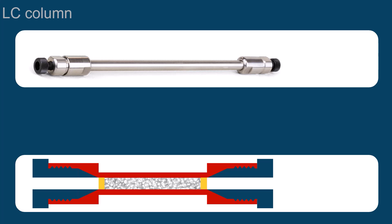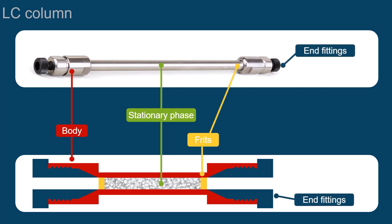The LC column contains the stationary phase. It also consists of the body, the end fittings, and the frits. The body of the column is tubular and mostly made of metal. The frits are filters, located at each end of the column. They prevent particles from entering the column and ensure that the stationary phase and other debris remains in the column body.